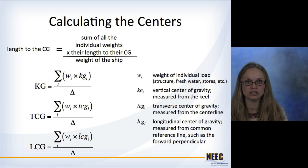For this here, I'm going to use capital letters to refer to the overall ship characteristics, and lowercase letters are for all of the individual things that we're talking about. Then, to find the lengths of the CGs, like KG, TCG, and LCG, it's just a weighted average. You take the sum of all the individual weights times their length to the CG, and then you divide it by the total weight of the ship.